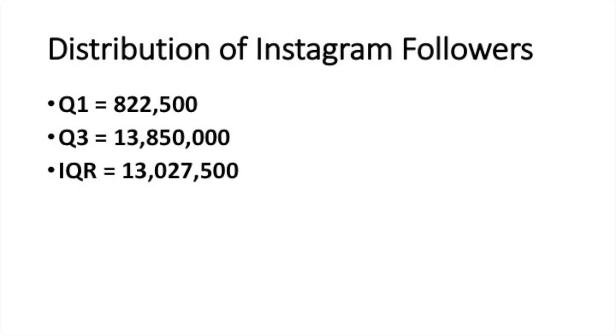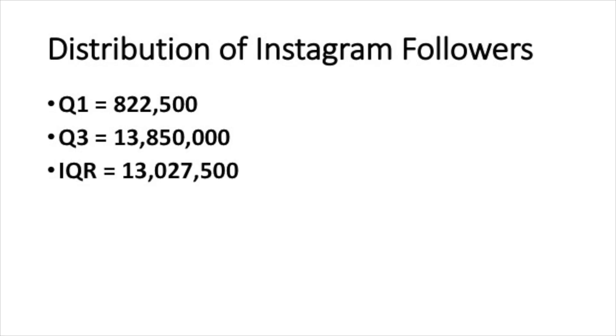Here's information on the first and third quartiles from the distribution of Instagram followers. The first quartile, or the 25th percentile, is about 822,000 followers. This means that 25% of the celebrities in our data set have fewer than this number of followers, and 75% have more. The third quartile is a little less than 14 million followers — specifically 13.8 million — meaning 75% of celebrities have fewer than that, and the top quartile has over that amount. This gives us an interquartile range of just over 13 million followers.